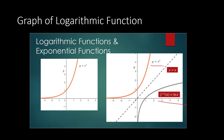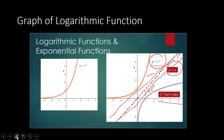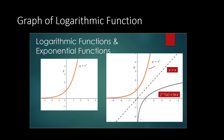If you want to visualize the graph of ln of x and find it difficult, here is what you do. You begin from the graph of y is equal to e to the x — you already know the graph of the natural exponential function. Then you draw the line y is equal to x, which makes a perfect 45-degree angle with the horizontal axis. You then fold your plane across this line, and the image that y equals e to the x makes on the other side is going to be the graph of y equals ln of x.